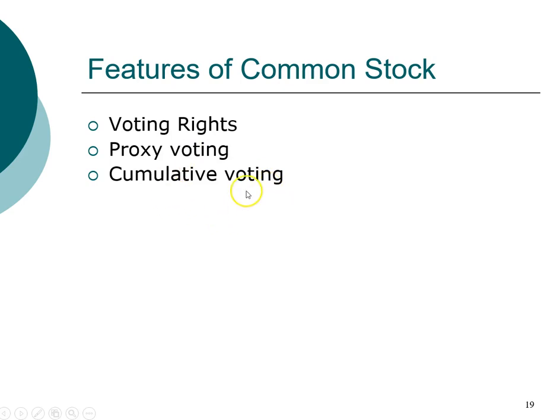With cumulative voting, what that allows minority stockholders to do is pool all the votes they have and nominate one candidate to represent them on the board of directors.